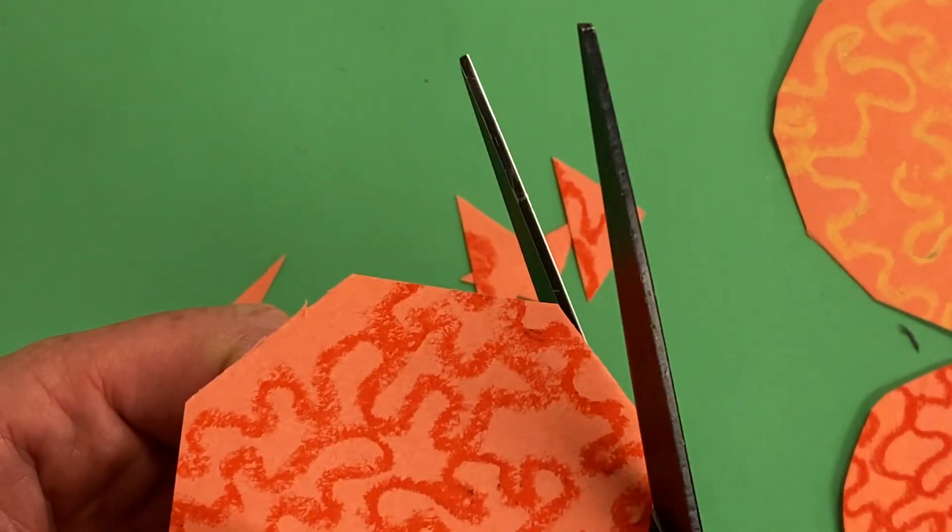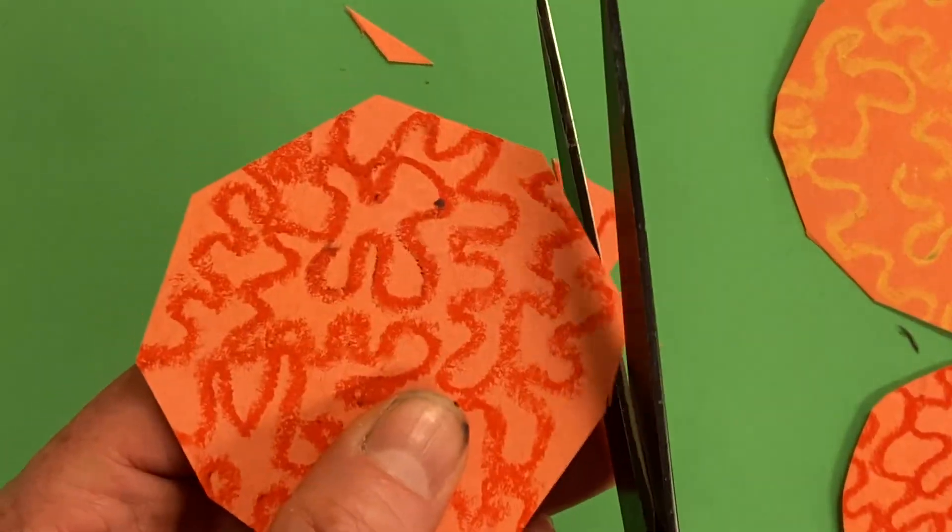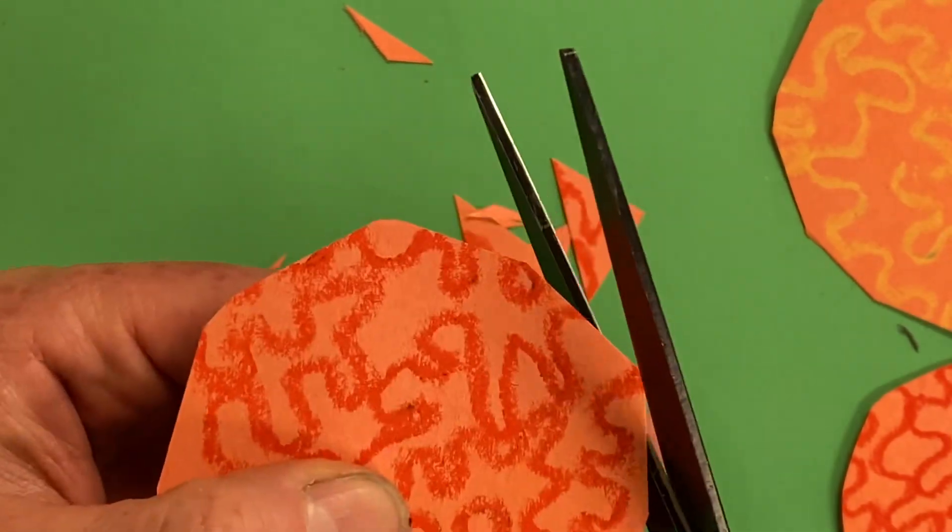And now I'm going to cut off tiny triangles - tiny, tiny, tiny, tiny, tiny, tiny, and tiny.